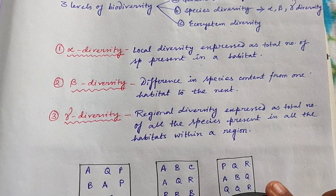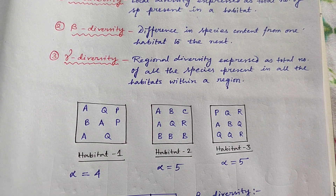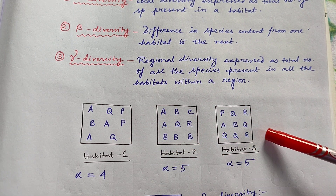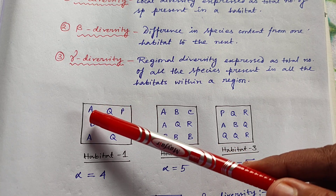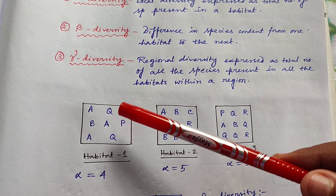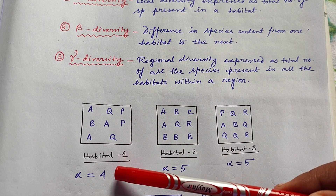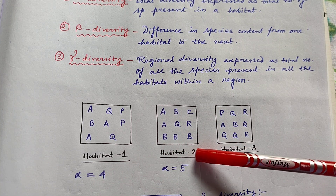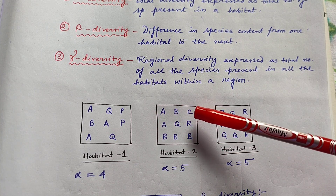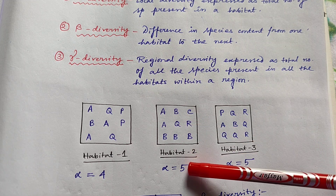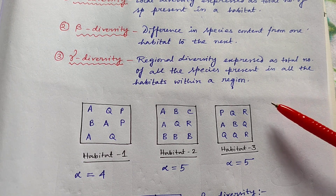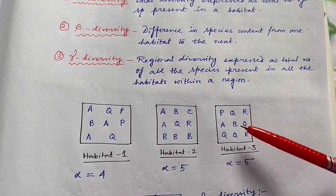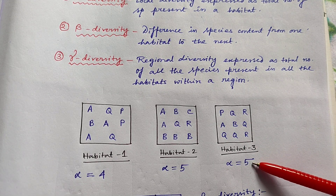Let's look at an example. There are three habitats. Habitat 1 has species A, B, T and Q — four types of species — so alpha diversity of Habitat 1 is four. Habitat 2 has species A, B, C, Q and R — five types — so alpha for Habitat 2 is five. Habitat 3 has P, Q, R, A and B — five types — so alpha diversity for Habitat 3 is also five.